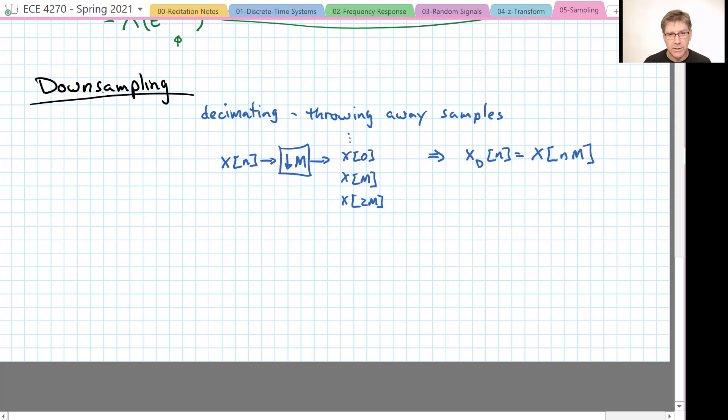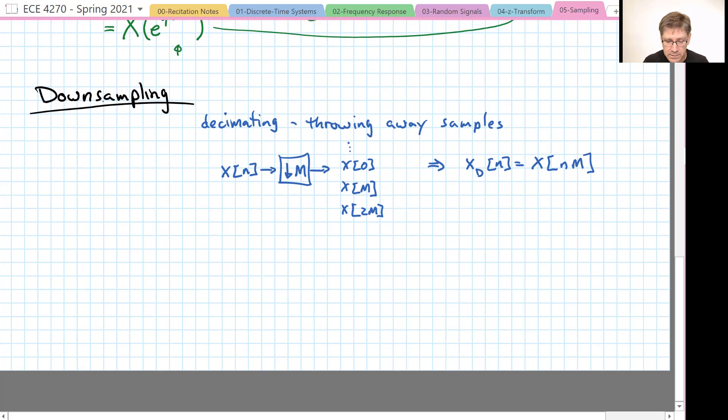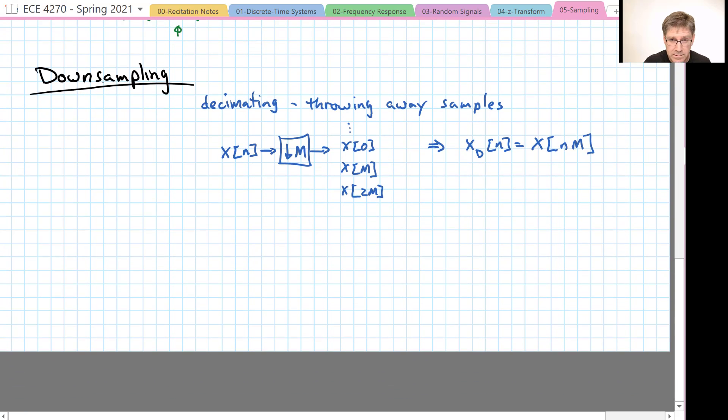This, as you can imagine, has a profound effect on the spectrum. What it will do is essentially cause all of our virtual copies to now squeeze down on top of each other. So if we started out with something that looked like this, and then every 2 pi we would have yet another copy...